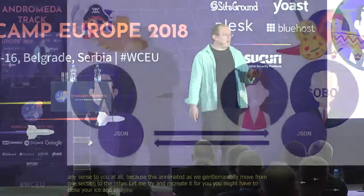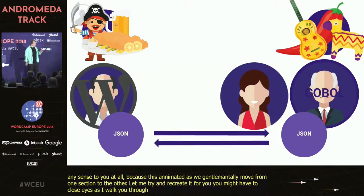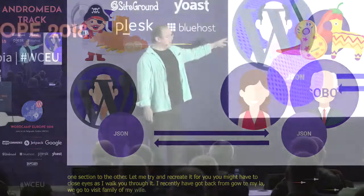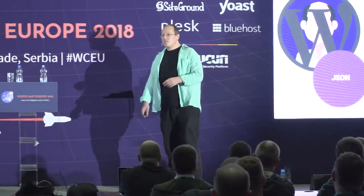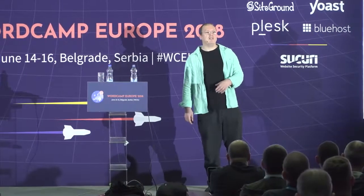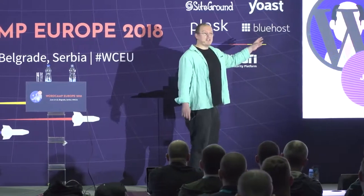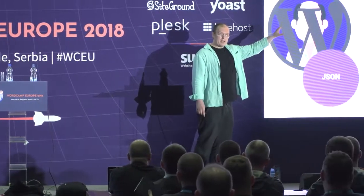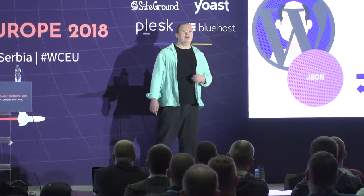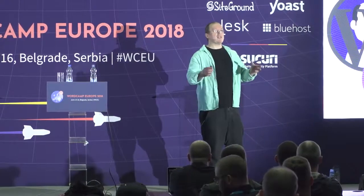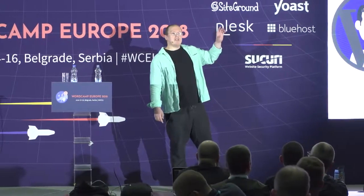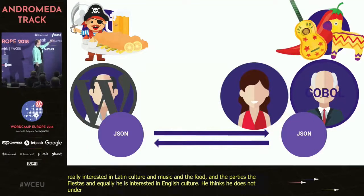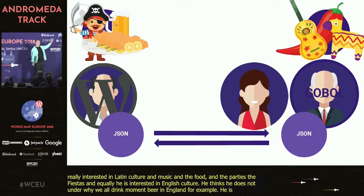I recently got back from Guatemala — my wife is Guatemalan, so we were visiting family, and it got me thinking about APIs. Behind the WordPress logo is me, and over there is my father-in-law. My father-in-law speaks a smattering of English, and my Spanish is criminally bad, so it's really difficult for us to communicate. But he's got things I'm really interested in — Latin culture, music, food, and fiestas. And he's interested in English culture — warm beer, fish and chips, and he genuinely thinks we're all pirates in England.